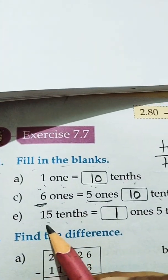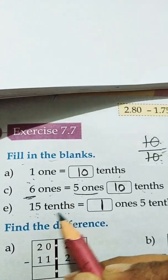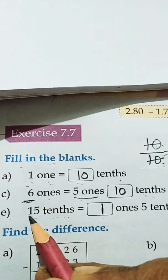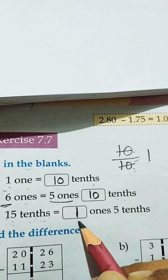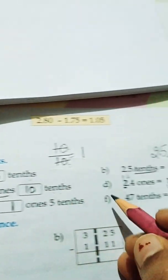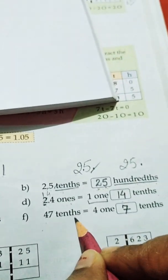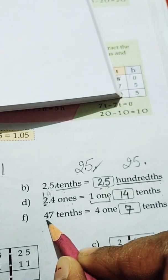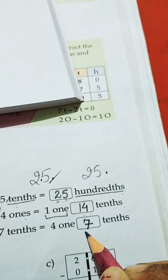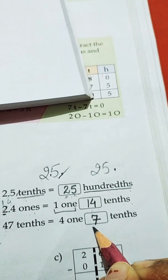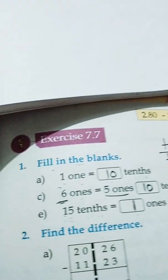In E part, we have 15 tenths. 15 tenths means 1 one and 5 tenths, so here we will write 1 in the blank. In F part, there are 47 tenths, which means 4 ones, 1, and 7 tenths. So in the blank we will write 7 tenths.